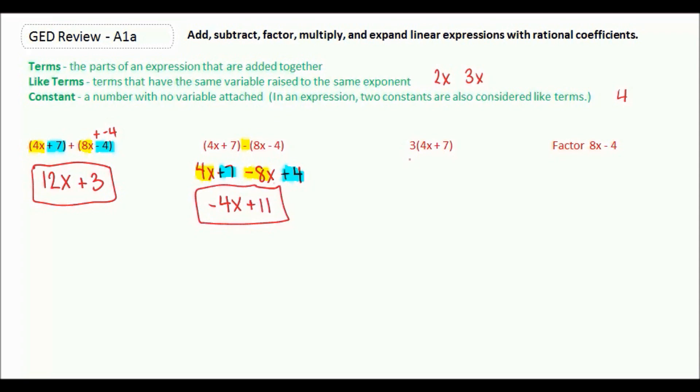Here we have an expression on the inside multiplied by a whole number on the outside. This is called the distributive property. We need to take this number on the outside and multiply it by both things on the inside. So we're going to say 3 times 4x, bring down whatever sign is there, and then 3 times 7. Well, 3 times 4x is 12x, and 3 times 7 is 21. Not like terms, so that is our final answer.